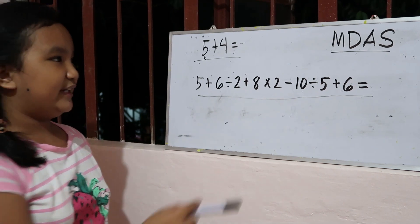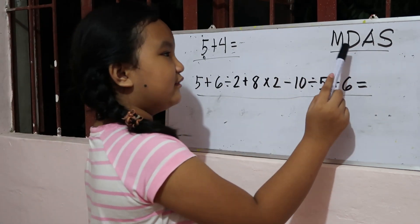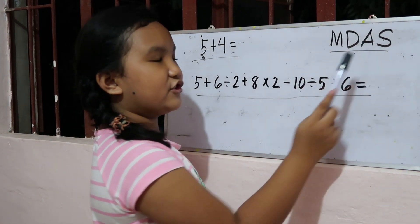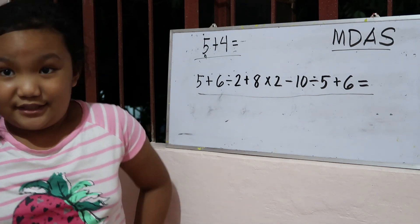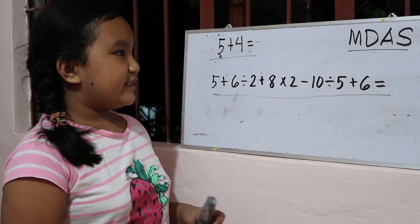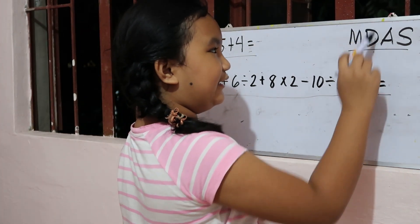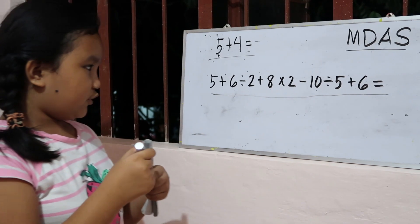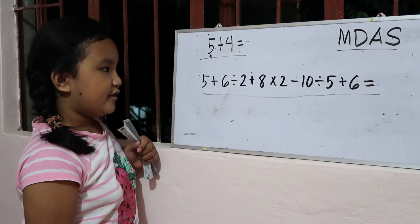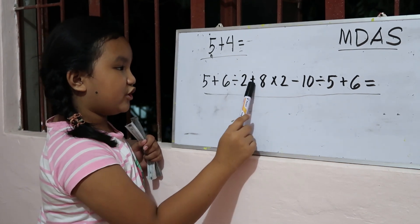For this, we need MDAS: multiplication, division, addition, subtraction. That's why we should know. So what these bits are used for — if you try to complete a number sentence, you can see there's a lot of operations.